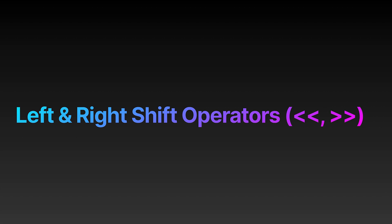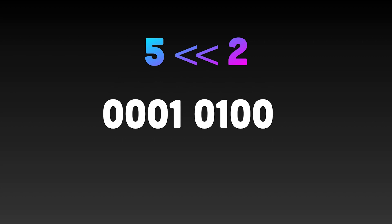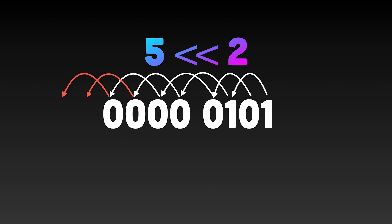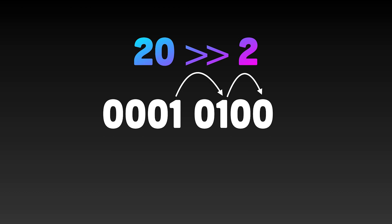The last two operators are left shift and right shift. As the name suggests, these operators shift the bits of a number either left or right. Like the NOT operator, the shift operators work on a single number, and the second number denotes how many bits you want to shift by. If we take the number five in binary and use the left shift operator to shift all the bits by two, we move all those bits two positions to the left. When shifting left, the leftmost bits get discarded. If you shift number five by two bits the final result is 20. If we then take 20 and shift it two bits to the right, we get five again.